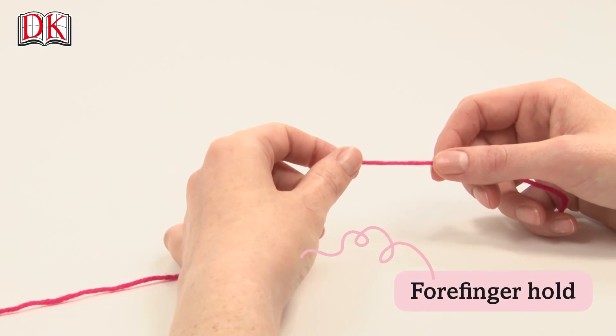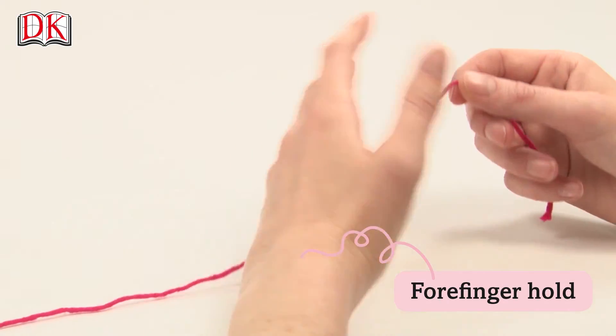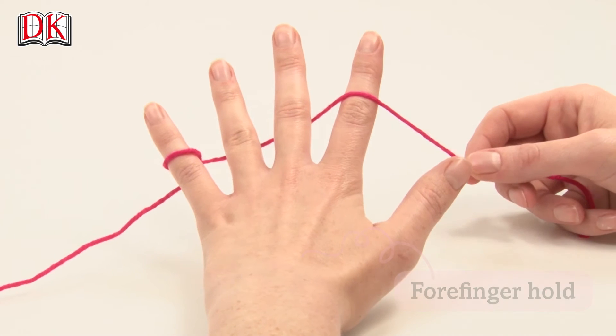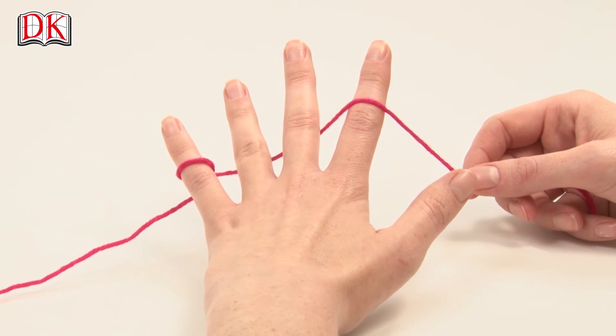First is the forefinger hold. Pass the yarn around the little finger of your left hand, under the next two fingers and over your forefinger.